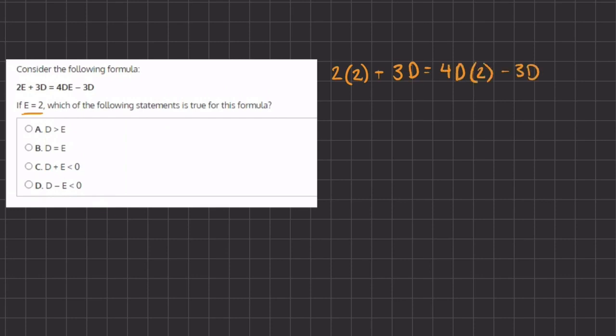Now let's start simplifying. We have 2 times 2, which is 4, plus 3d equals 4 times 2, which is 8d, minus 3d.